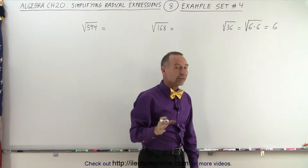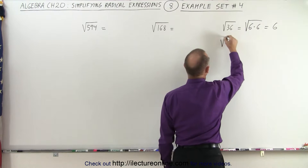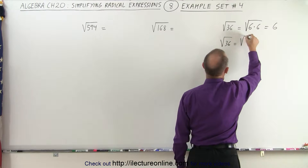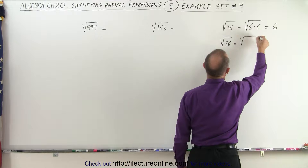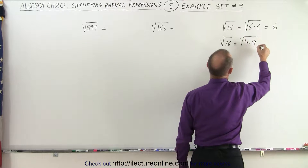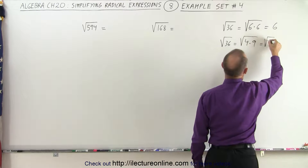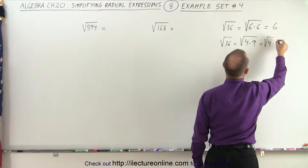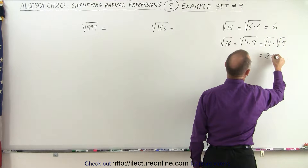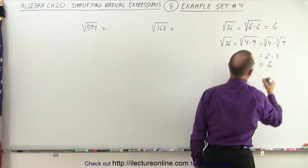Or you might have thought: the square root of 36 can be written as the square root of 4 times 9, and so this is equal to the square root of 4 times the square root of 9, and that's equal to 2 times 3, which is equal to 6.